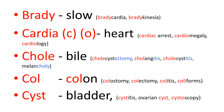The prefix 'cyst' — a cyst is a fluid-filled space — we normally use it as a prefix to mean bladder. We've already noted cholecystitis where 'cyst' means bladder in the context of the gallbladder. But when we use 'cyst' on its own we usually mean the urinary bladder. So cystitis is inflammation of the urinary bladder. An ovarian cyst is a fluid-filled space in the ovary. Cystoscopy means to look into the bladder.